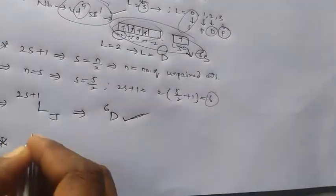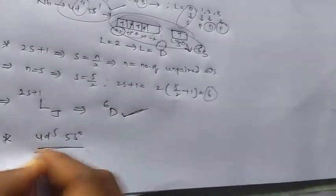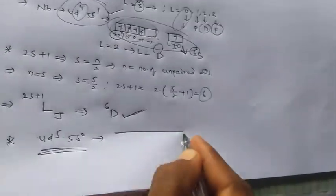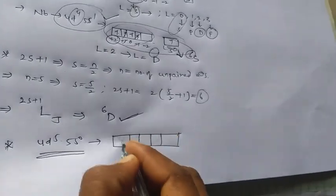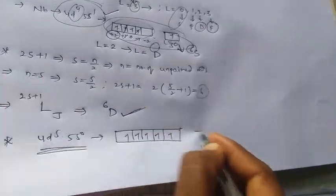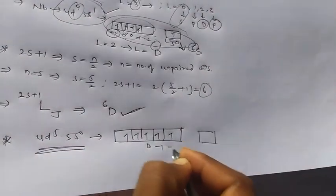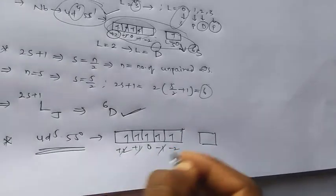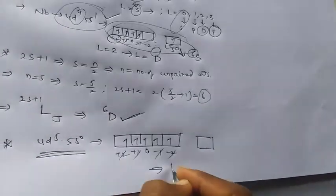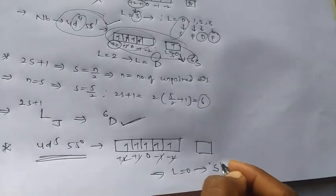If you check for 4D5, 5S0 electronic configuration. From this 1, 2, 3, 4, 5. From this all are cancelled. So we get L is equal to 0. From this we can get S as a term symbol.